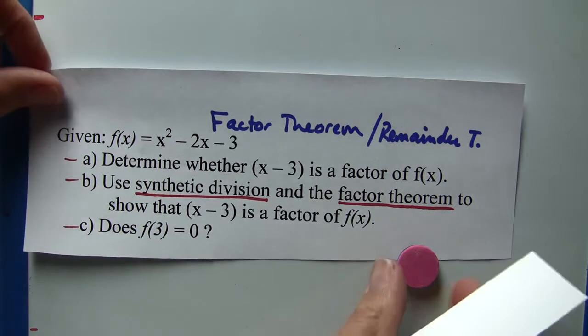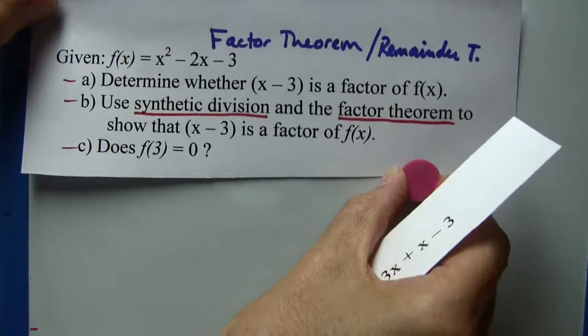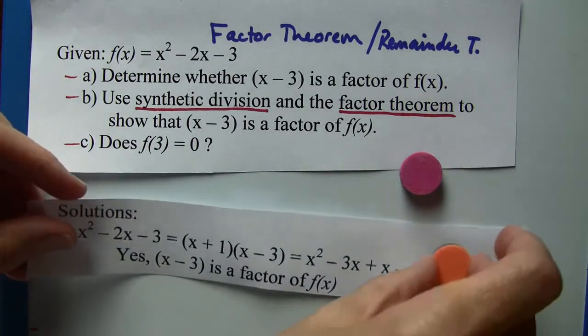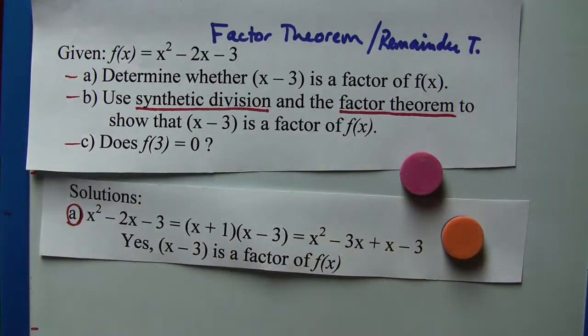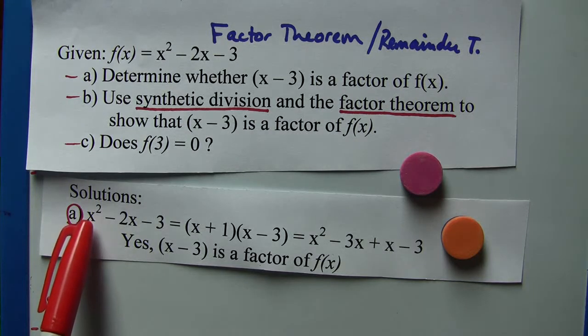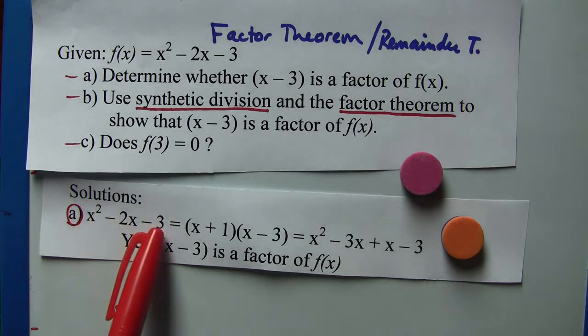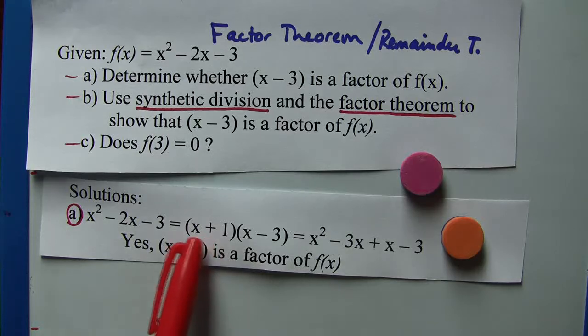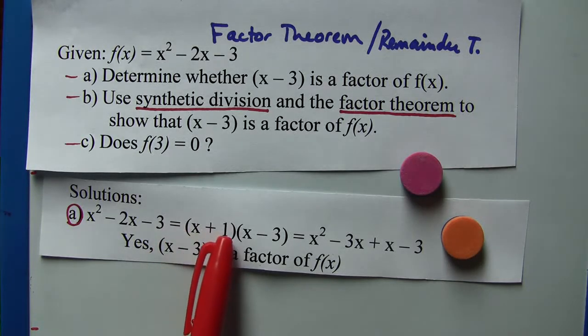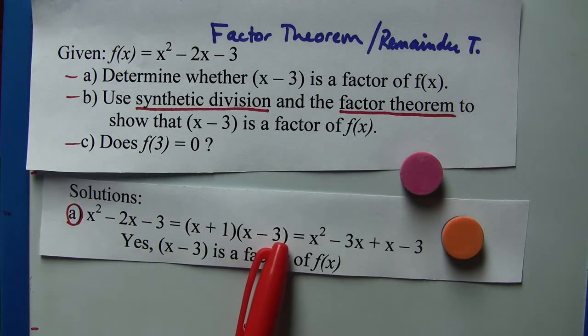For part a, let's take x² - 2x - 3 and factor it out. When we factor it out, we get (x + 1)(x - 3).